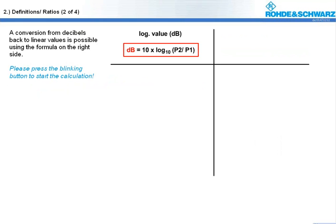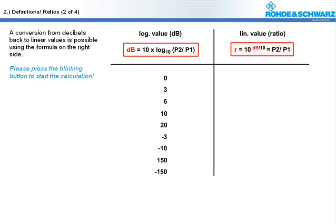Of course, it is also possible to convert decibels back to linear values. We must first convert from decibel to bell by dividing the value by 10. Since we are using the base 10 logarithm, we must raise the number 10 to this power. Just press the button to get a conversion table from logarithmic to linear values.